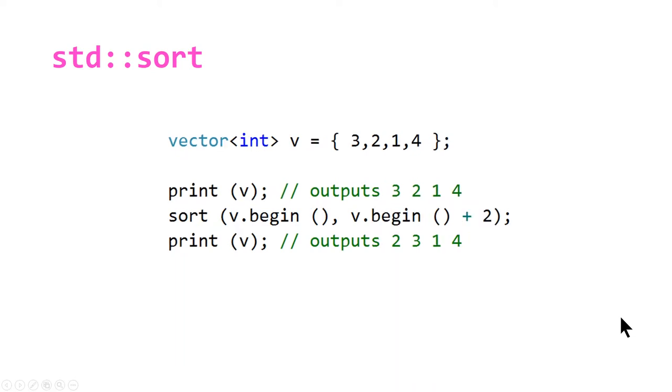Moving on to our next example, we don't necessarily need to sort the whole array. Here we're declaring a vector of integers using an initializer list. We print it out and it outputs 3, 2, 1, 4. Here we're calling the sort function, but instead of passing the iterator pointing to the past-the-end element, we're giving it an iterator pointing to the third element.